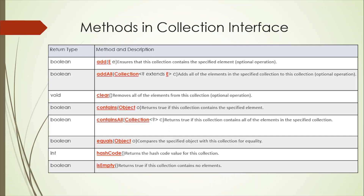The second method is addAll, where we provide a list of elements that will all be added to the specified collection. The third method is clear — if we want to remove all elements present in a collection object, we can use the clear method. Next is contains — if we want to search for a specific element in the list, we can use the contains method. It takes the element as an argument, searches the collection, and returns true if it exists, otherwise false. Next is containsAll, which is similar to contains but accepts multiple elements as a collection argument and checks if that collection is a subset of the main collection.